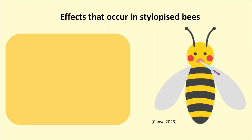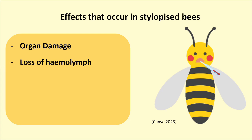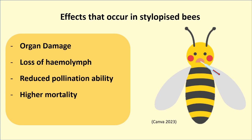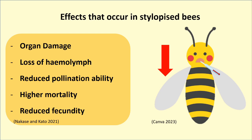Stylopized bees suffer a great range of effects as a result of the parasite burden, including organ damage and loss of haemolymph due to the females feeding on their host, reduced ability to pollinate, a higher mortality rate, and a reduced fecundity rate, meaning that overall the population of these bees becomes reduced.